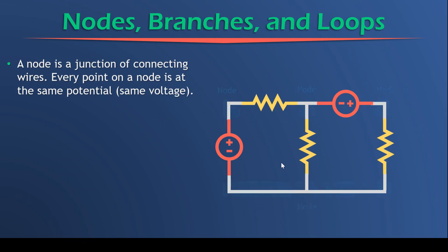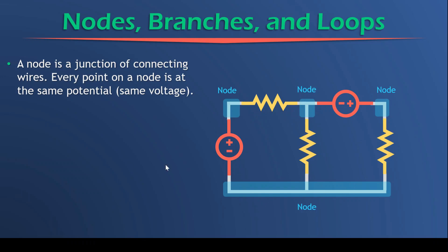If we look at the circuit, here's a point of connection between two elements, here's a point of connection between three elements, and here's a point of connection between two elements, whilst we also have a point of connection here between three elements. So this would be defined as a node, and in this circuit we have one, two, three, four nodes.